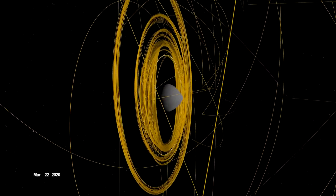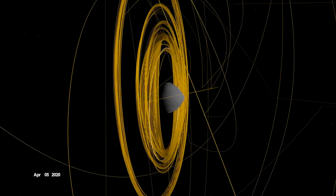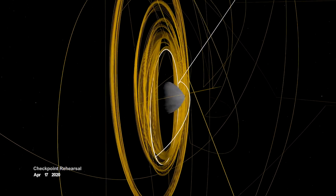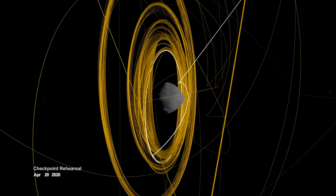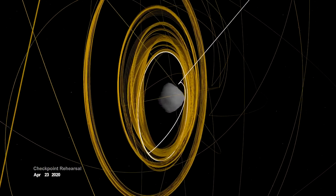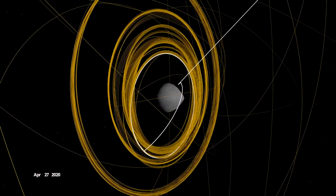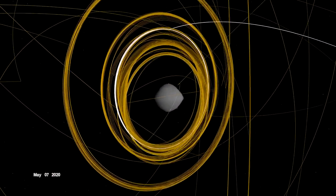In mid-April, OSIRIS-REx performed the first of two rehearsals prior to sample collection. It navigated to a predetermined checkpoint about 125 meters above Bennu, then descended to within 65 meters before backing away.